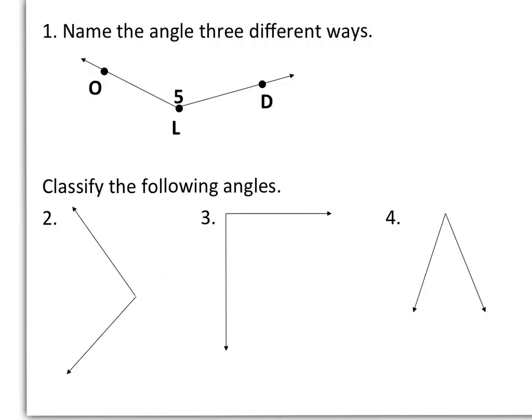We can name angles in different ways. In number one, we're going to name the angle in three different ways. I could call it angle OLD, I could also call it angle DLO, or I could call it angle 5.